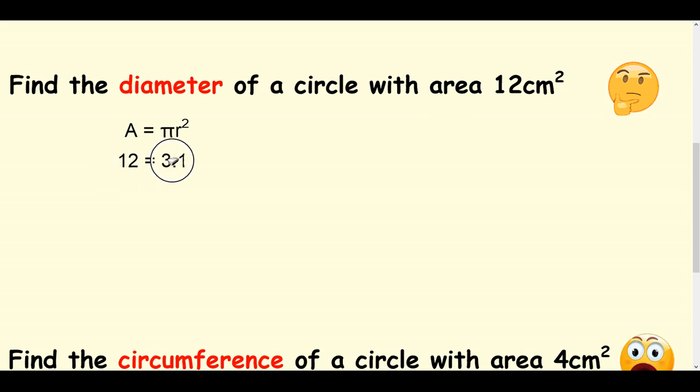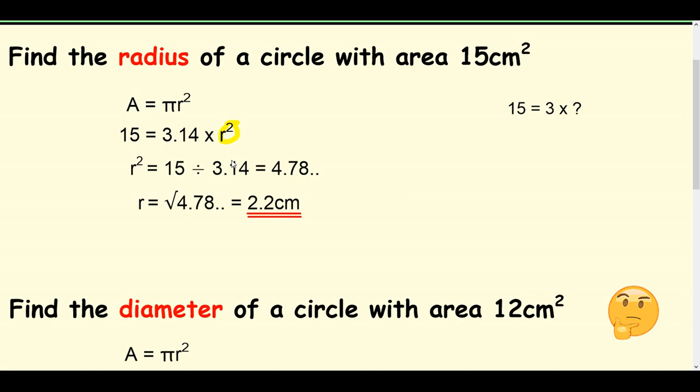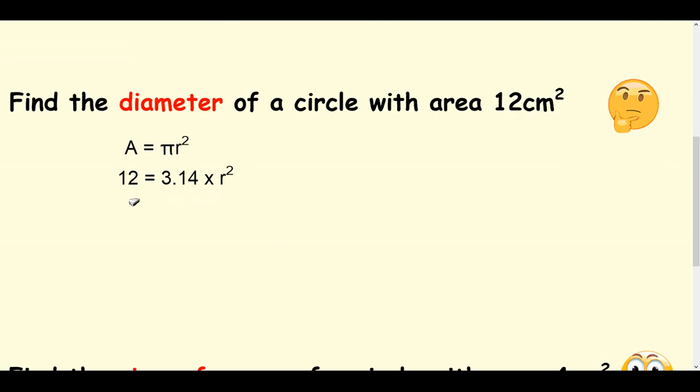I'm going to put the 12 in, the 3.14 in, and I've got my r squared. Now, remember what happened up here? To get r squared, we divided these two things just by thinking about this simple example here. So, it's going to be r squared equals 12 divided by 3.14, which is going to give us 3.82.